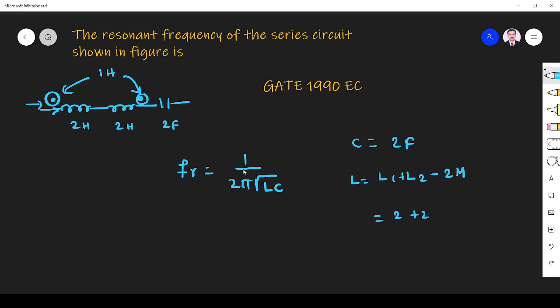So 2 plus 2, this is L1 plus L2. M is indicated as 1H. So minus 2 times 1, it is 2H. So L is 2H.